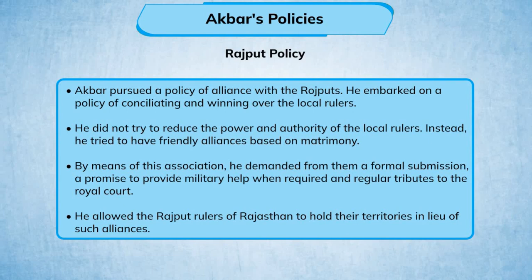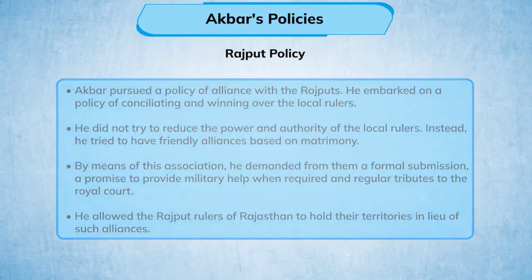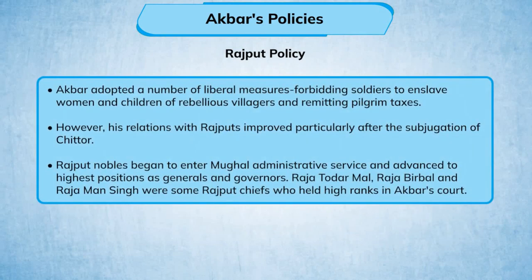By means of this association, he demanded from them a formal submission, a promise to provide military help when required, and regular tributes to the royal court. He allowed the Rajput rulers of Rajasthan to hold their territories in lieu of such alliances. Akbar also adopted liberal measures, forbidding soldiers to enslave women and children of rebellious villagers and remitting pilgrim taxes.